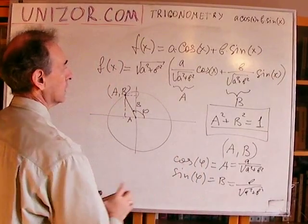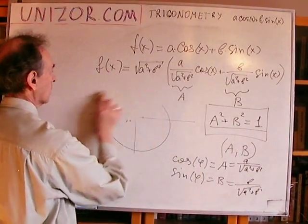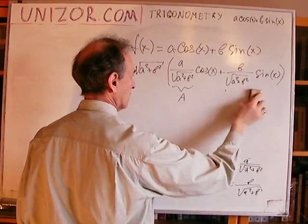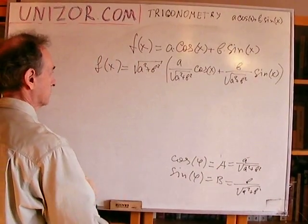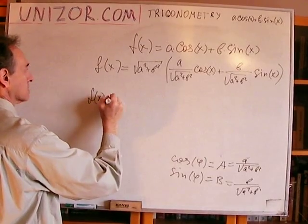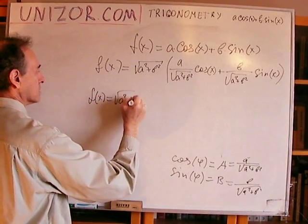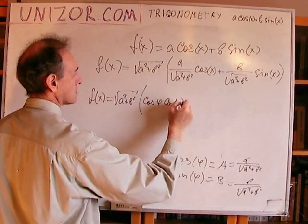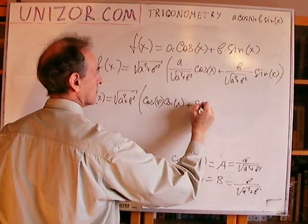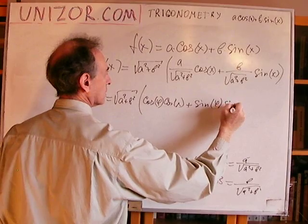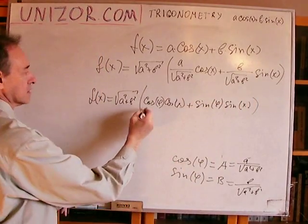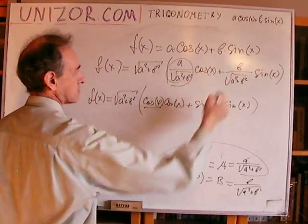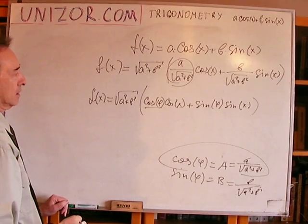Now, using this, let me just rewrite this particular formula in the following way: f(x) equals √(a² + b²), and here I will put cos(φ)cos(x) + sin(φ)sin(x), right? Since this is the same as this, and sine is the same as b over square root.